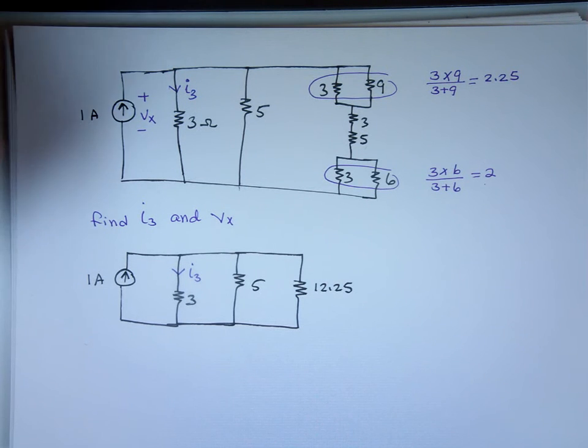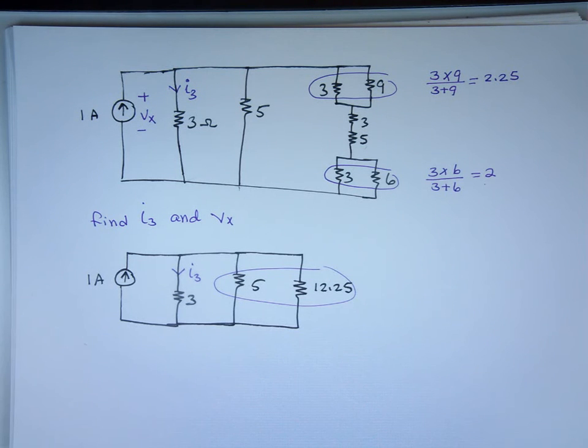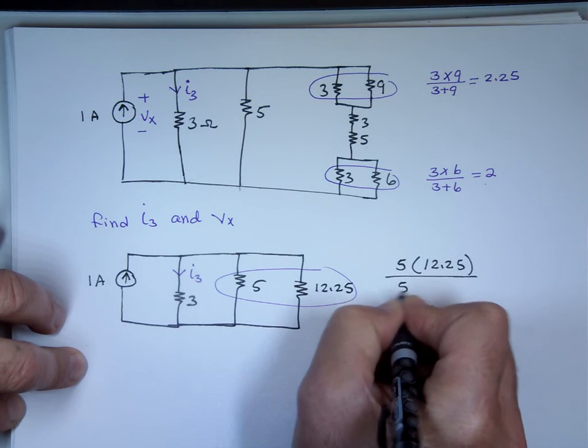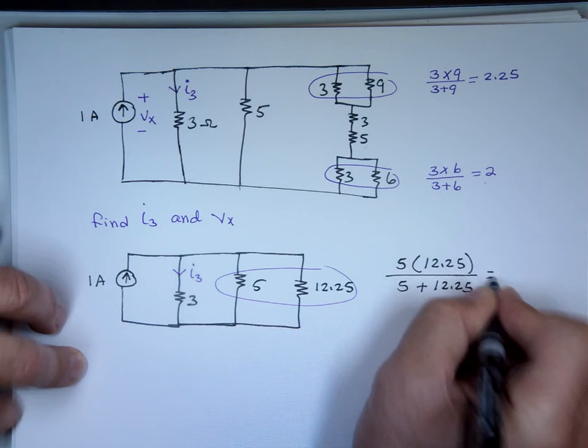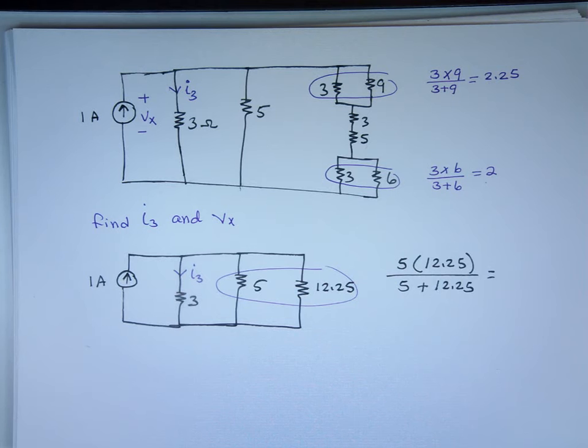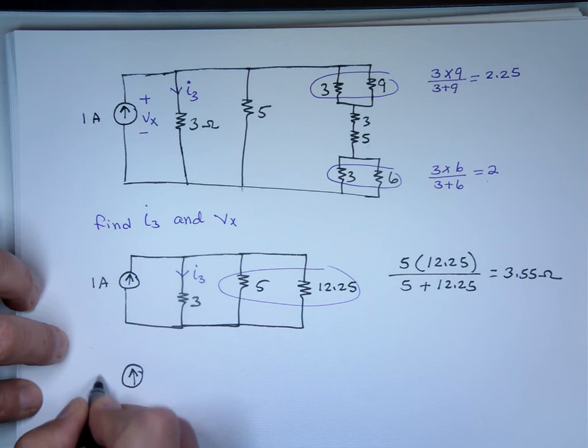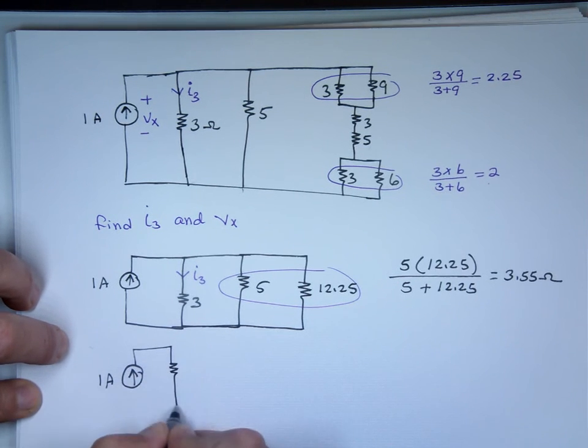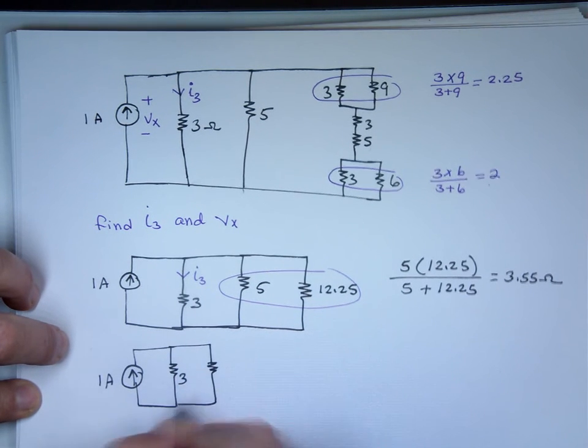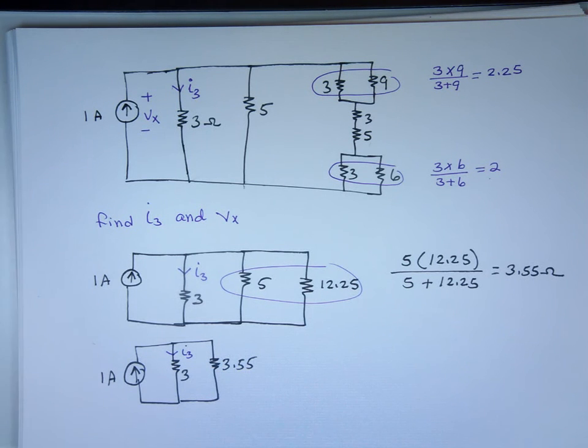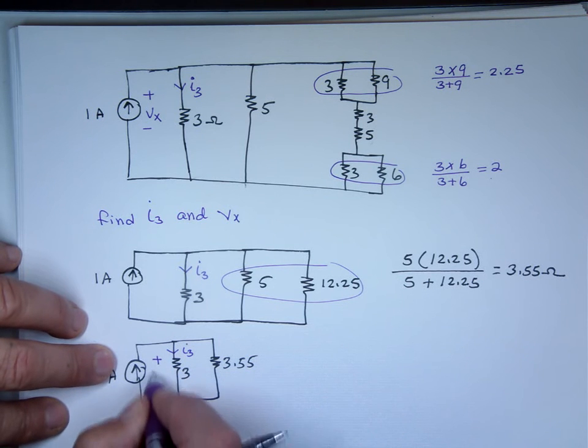Now again, let's take a look at these two. How are they connected? Parallel. The product over the sum. 5 times 12.25 divided by 5 plus 12.25, that's 3.55. So my circuit now looks like this. And this is I sub 3, and this is the voltage. That's my circuit now.